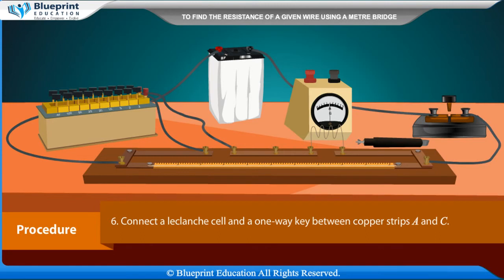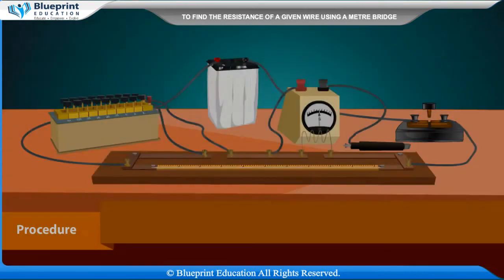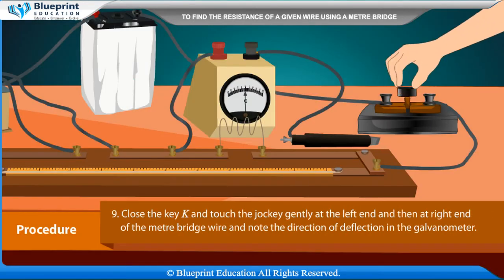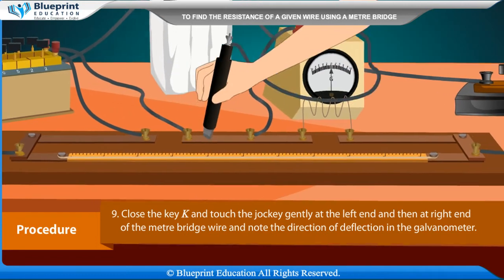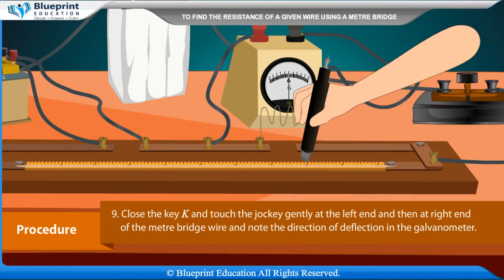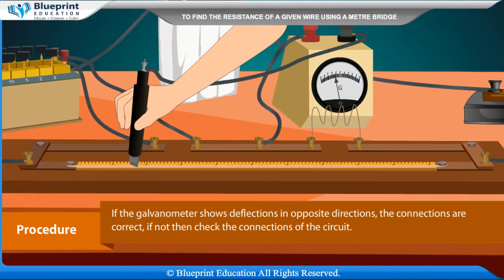Connect a Leclanche cell and a one-way key between copper strips A and C. Connect a galvanometer and a jockey with the middle screw given at copper strip D. Apply some resistance, say 2 ohm, from the resistance box by taking out the corresponding plug. Close the key K and touch the jockey gently at the left end and then at the right end of the meter bridge wire, and note the direction of deflection in the galvanometer. If the galvanometer shows deflections in opposite directions, the connections are correct.